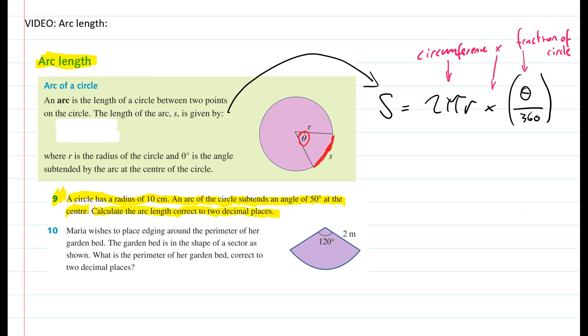If we think about what that looks like, we've got a circle. It has a radius of 10 centimeters. This thing that says subtends just means that the arc has an angle which is 50 degrees there. We're trying to find out this part.